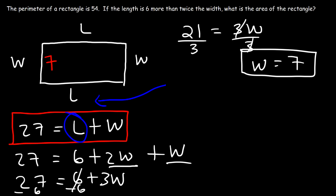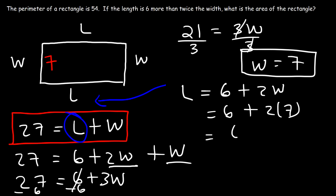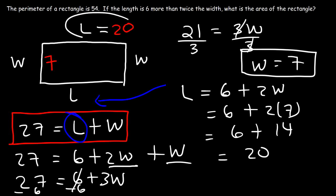Now that W equals 7, we can find the length using L equals 6 plus 2W. That's 6 plus 2 times 7 equals 6 plus 14, which is 20. So the length is 20. The area is length times width: 20 times 7 equals 140 square units.